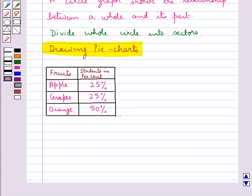We know that the total angle at the center of a circle is 360 degrees. So obviously the central angle for the sectors will be the fraction of 360 degrees. Let us find out the central angle for each sector.